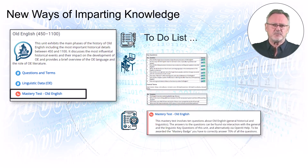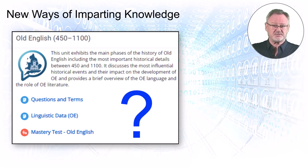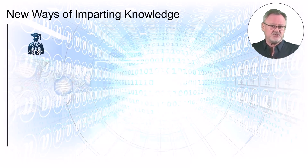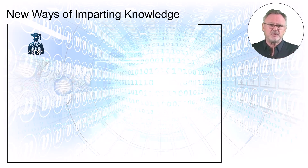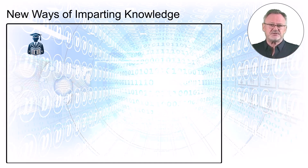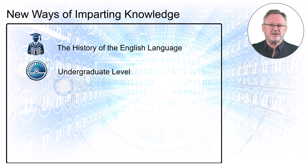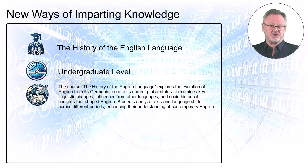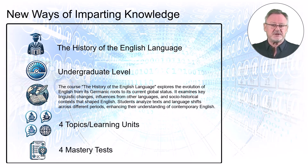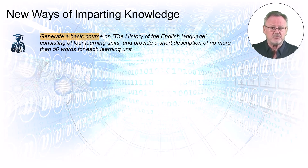But how do we produce such learning units? First, the course instructor defines the general framework conditions: the course title and level, a brief summary of the course content, the required number of learning units, and the principles of completion. With this prompt, for example, the course outline can be generated.